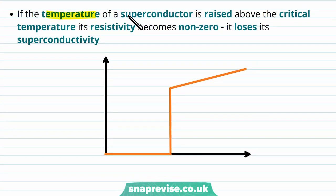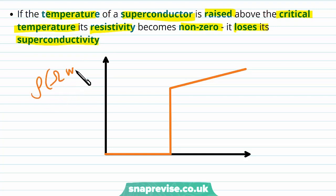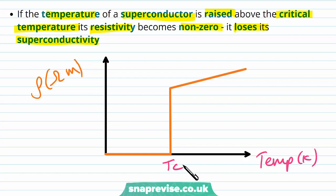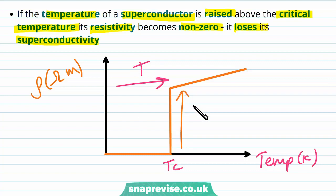If the temperature of a superconductor is raised above the critical temperature, its resistivity becomes non-zero, so it loses its superconductivity. On a graph of resistivity versus temperature, above the critical temperature the resistivity is no longer zero — the material is no longer acting as a superconductor.